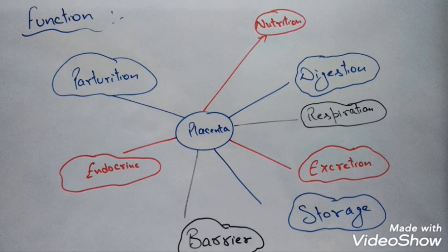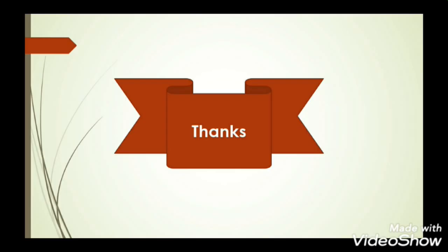The last function is parturition. The placenta initiates the process of parturition. The signal for parturition, though it originates from the fully developed fetus, the placenta helps in mild-induced uterine contractions called fetal ejection reflexes, helps in the synthesis of steroid hormones, which in turn help in the synthesis of prostaglandin as well as oxytocin hormone — and both these hormones participate in the process of parturition.